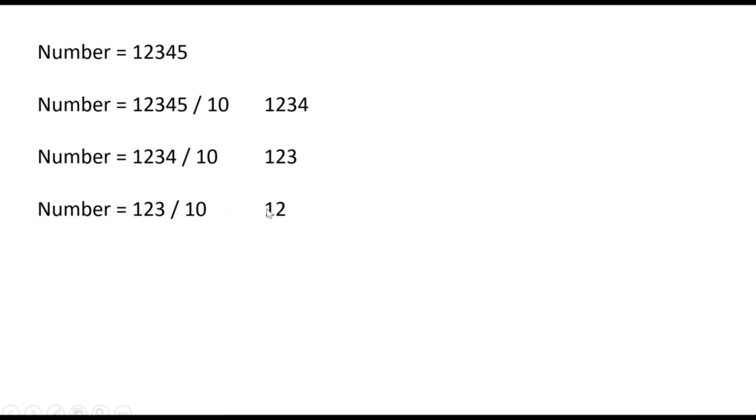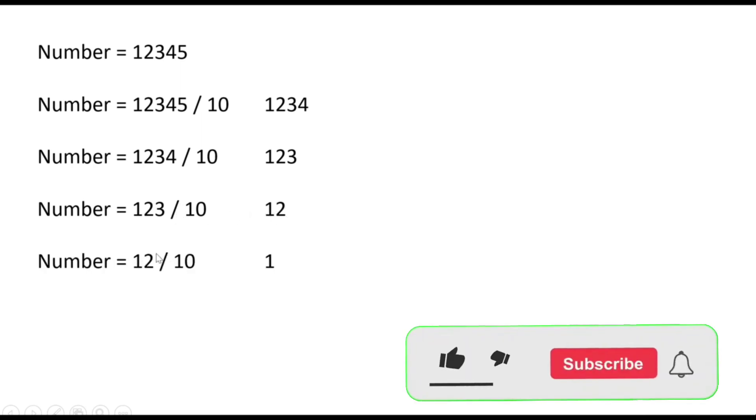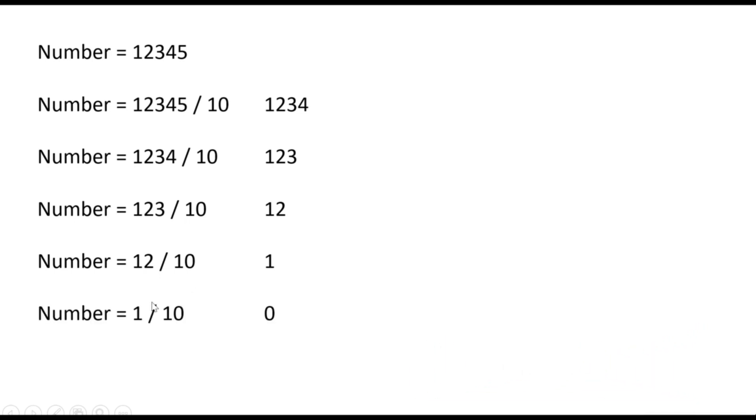What we will do is try to divide this number by 10. When we use this arithmetic operator and divide by 10, we get the quotient. Since it is an integer value, it will not store the decimal point. So dividing 12345 by 10 gives 1234, then 1234 divided by 10 gives 123, then 12, then 1, and finally 1 divided by 10 gives 0.